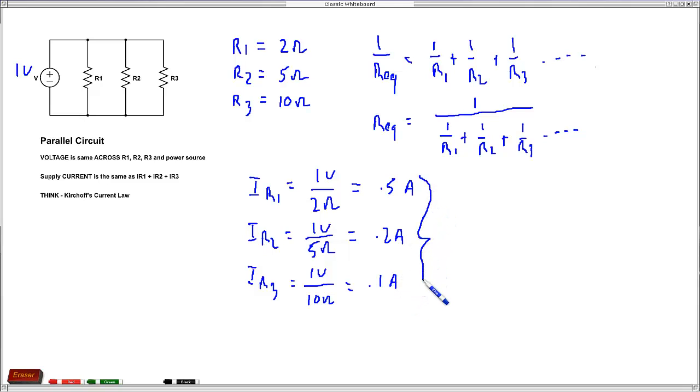So this is what we're summing right here, these currents. Every time we added a resistor, we added another path for current in this circuit. So this turns out to be 0.8 amps.